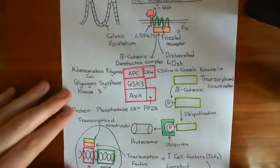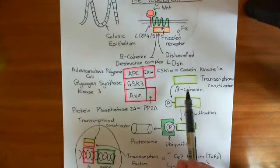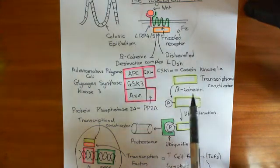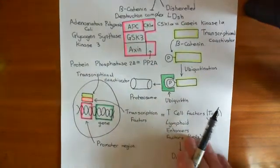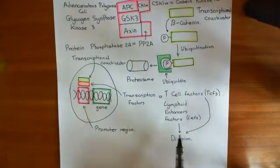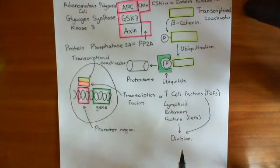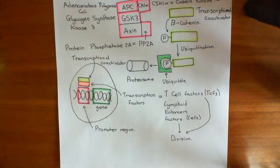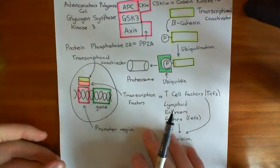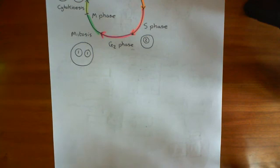So if we had loss of function of APC, it's going to cause a rise in the level of beta-catenin, and then cause the cell to move from interphase to G1 phase — which is what beta-catenin bound to TCFs or LEFs will do. It's going to basically cause the cell to over-divide. How do we get complete loss of APC? We'll talk about that in the next video.